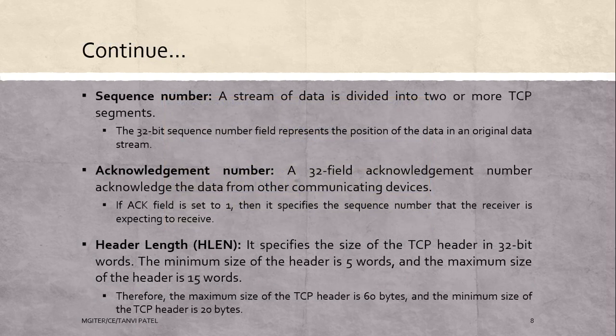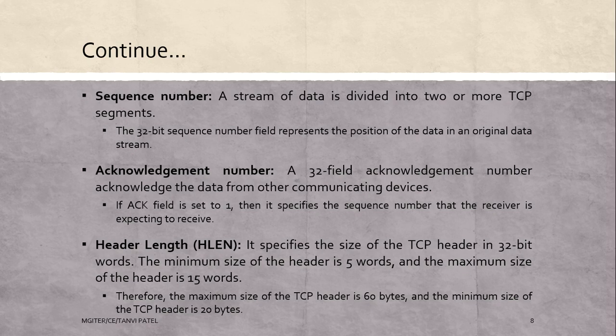Next is sequence number. A stream of data is divided into two or more TCP segments. The 32-bit sequence number field represents the position of the data in the original data stream. Next is the acknowledgement field: when set to 1, it specifies the sequence number that the receiver is expecting to receive.